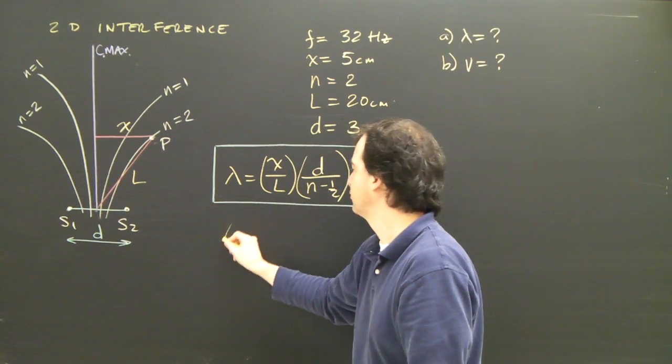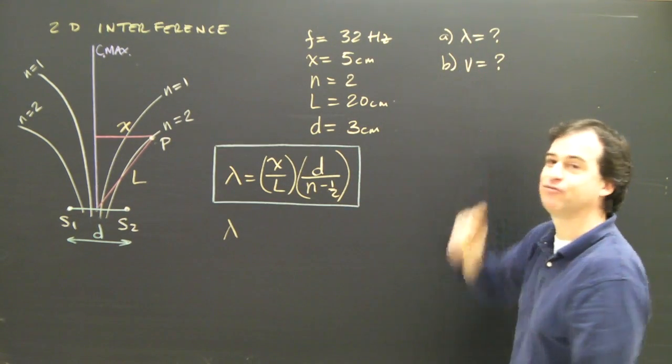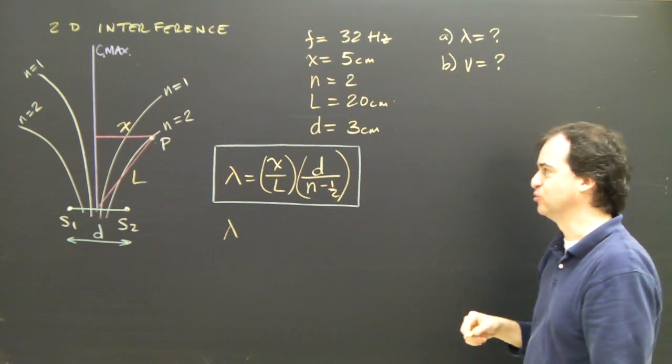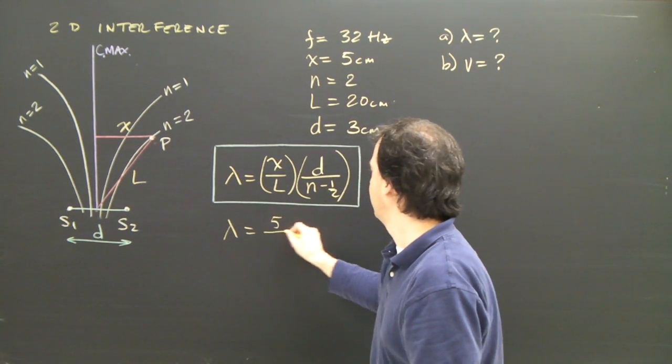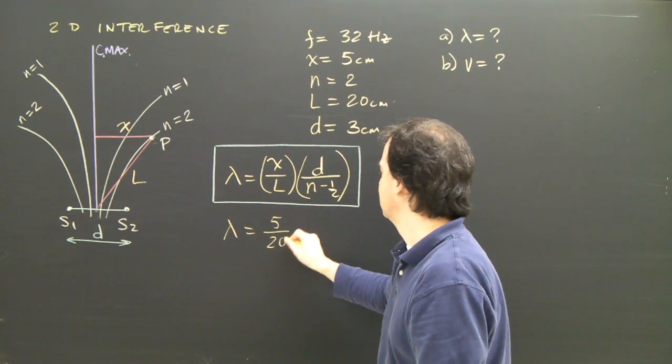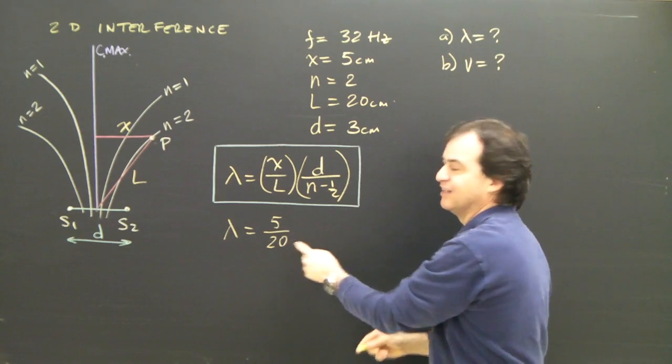So here's my formula. I'm interested in what is the wavelength that created this pattern and how fast were those waves moving. So lambda is X over L, 5 over 20. And it doesn't matter if I leave these as centimeters because the units cancel out.